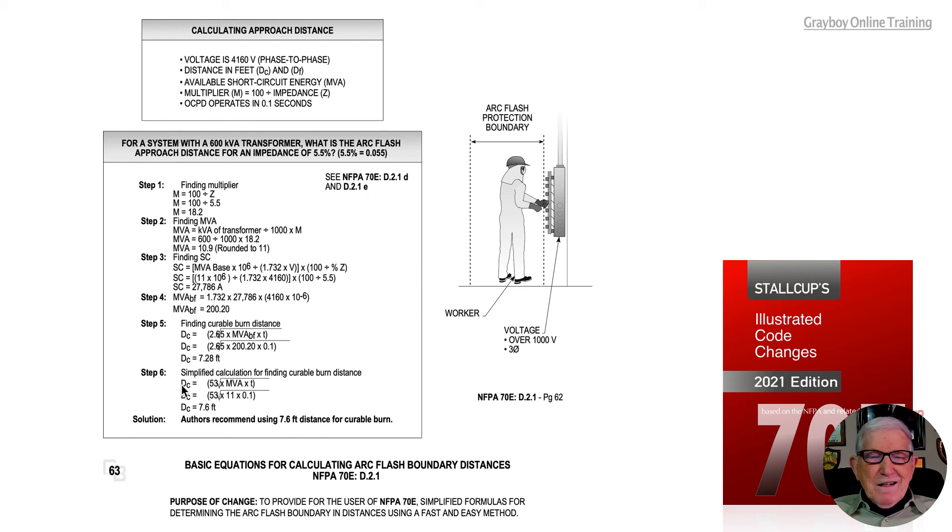The calculated distance for a curable burn is 53 times the square root of MVA times the clearing time. We would have 53 times the square root of 11 times 0.1.